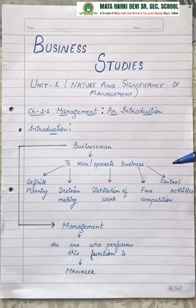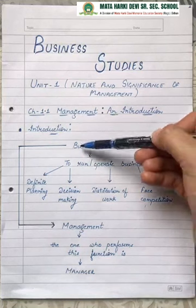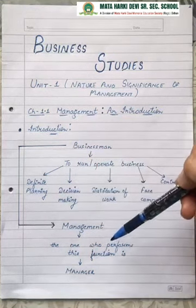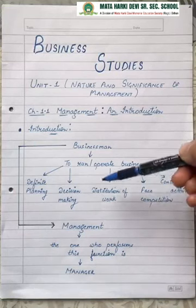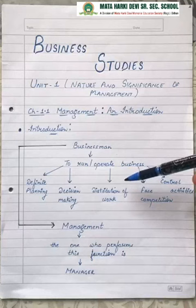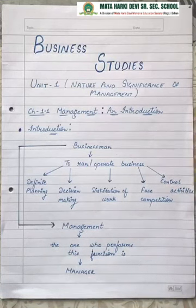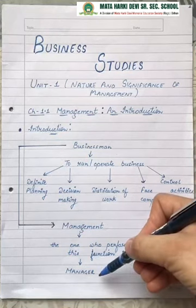But if a businessman wants to run his business efficiently and effectively, he or she needs to perform a function that is known as management. Management is the core element in a business which helps to run or operate a business and to perform all its activities in an efficient and effective manner. The person who performs this function is known as a manager.